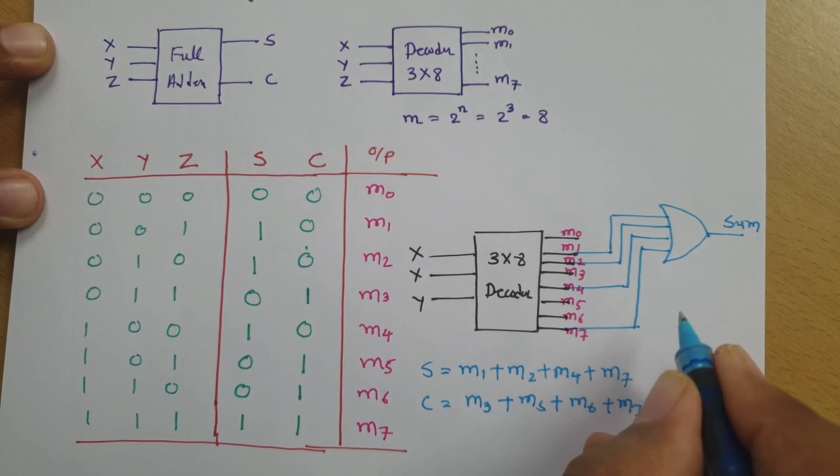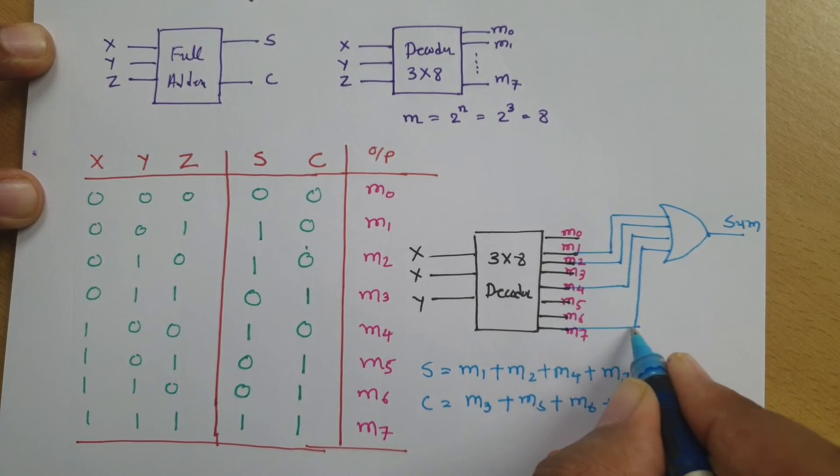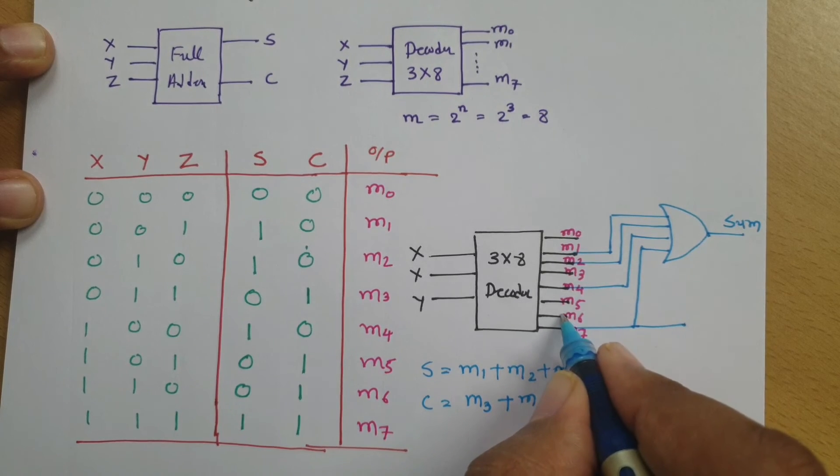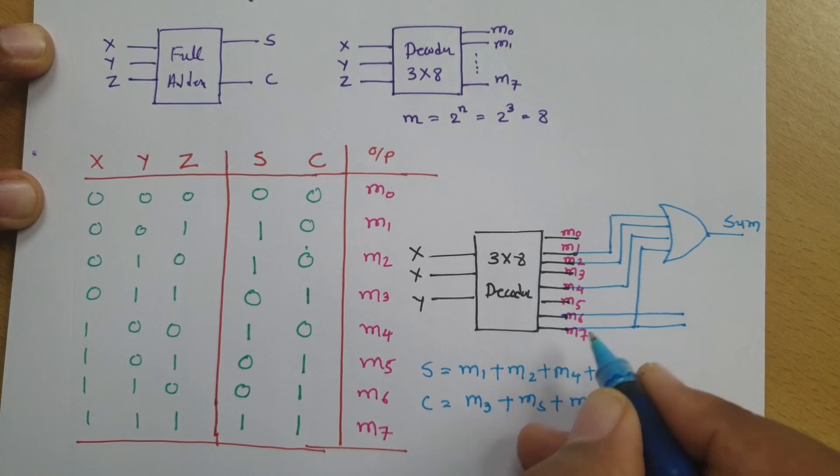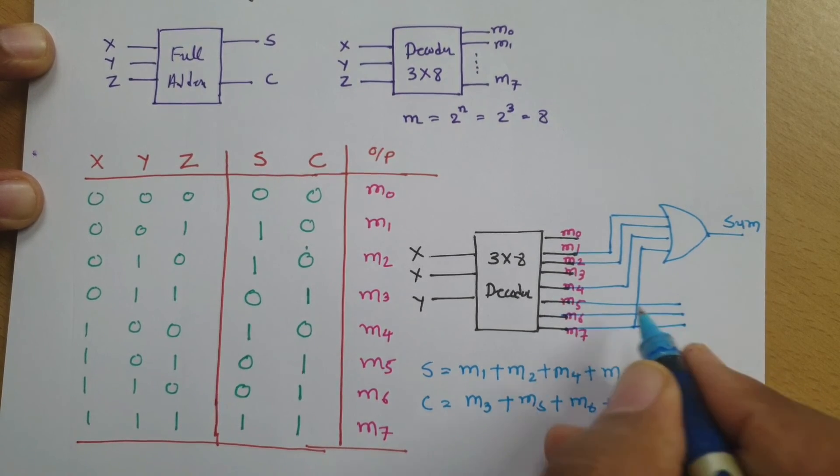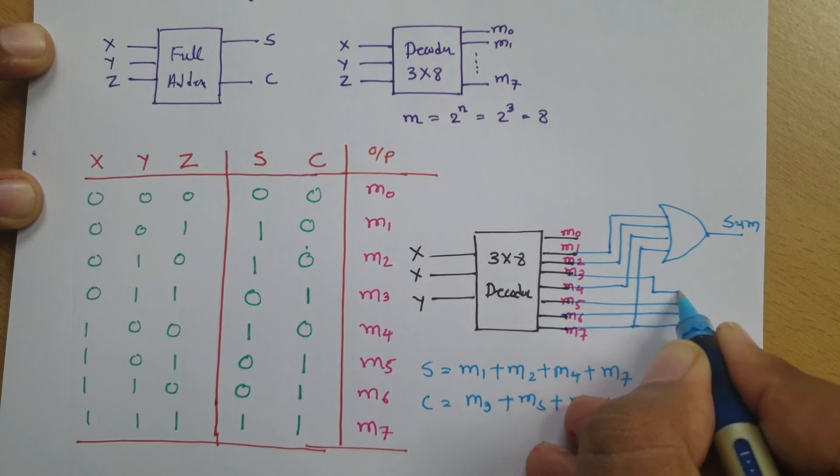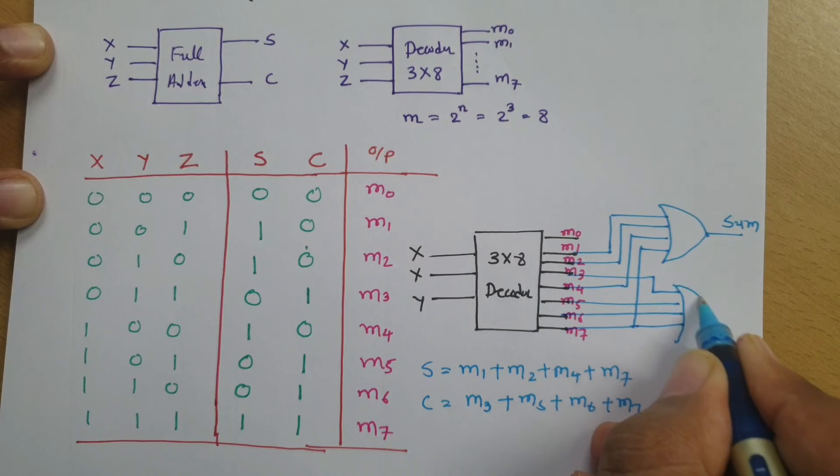So now I am making carry. This is M7 that we need to have, then M6, then M5, then M3 that we need to have. And if you OR this, you can have carry.